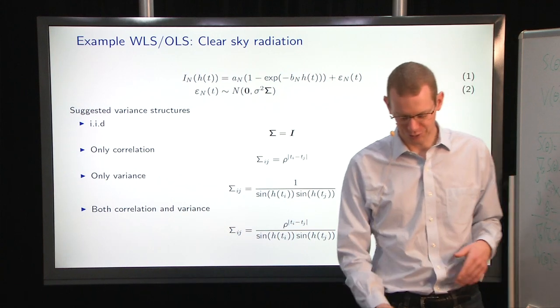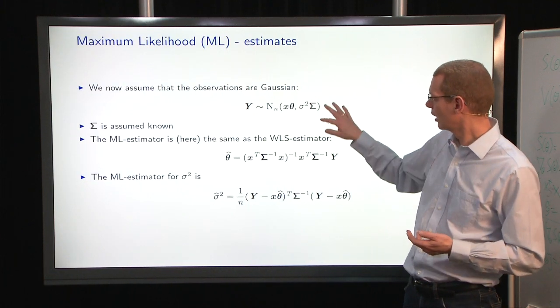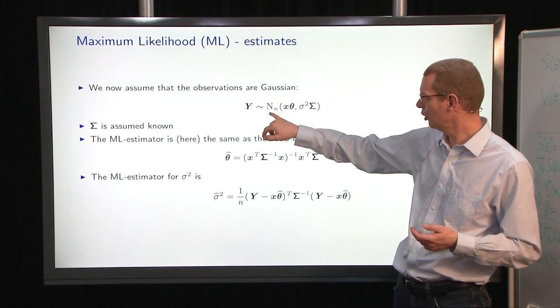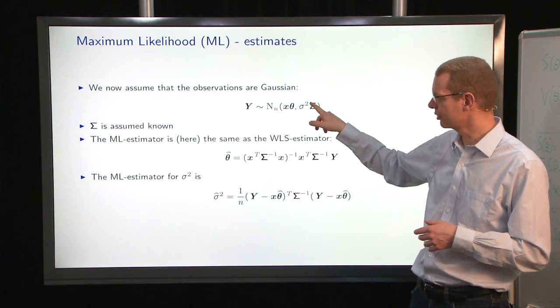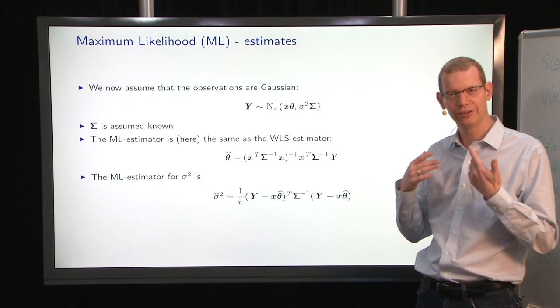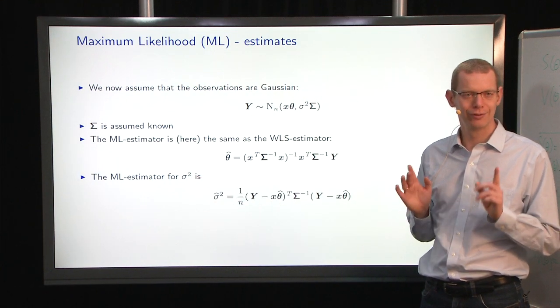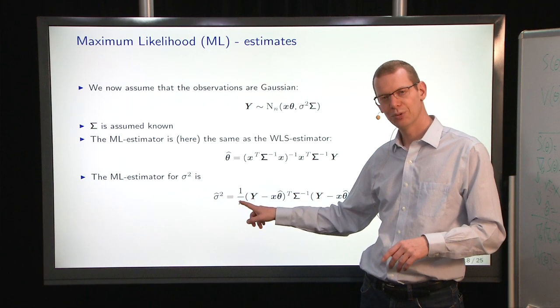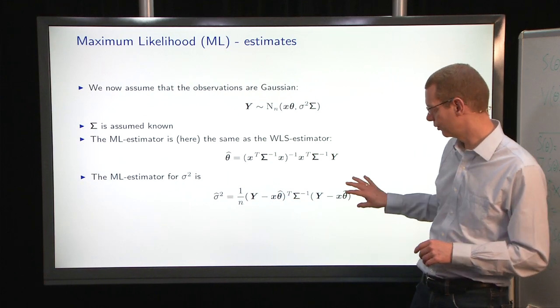And now the question is, how do we work with this? First, we'll just look at maximum likelihood. So what we have here is that we have the observations. We say that they come from normal distribution with a mean value structure and a covariance structure. And for now, we assume that the covariance structure here is known. And the maximum likelihood estimator here is exactly the same as the weighted least squares estimator. The estimator for sigma is slightly different. Look at it. There's one difference. And the difference is that we don't divide by n minus p, but just n. Because we assume in this case that the theta is somewhat known. So it's biased for the variance, but it's unbiased for the estimator here.